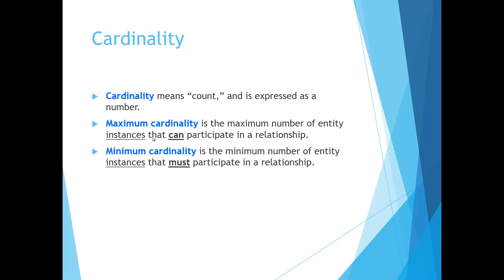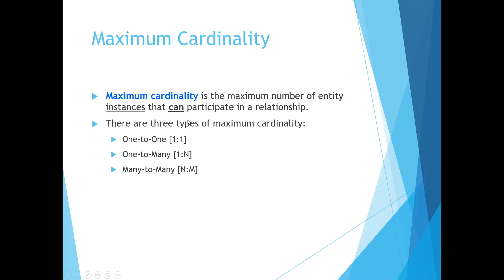Cardinality is the type of relationship between two entities, which can be expressed as a number. There are two types of cardinality: maximum and minimum. Maximum cardinality is the maximum number of entity instances that can participate in a relationship. Minimum cardinality is the minimum number of entity instances that must participate in a relationship. There are three types of maximum cardinality: one-to-one, one-to-many, and many-to-many.